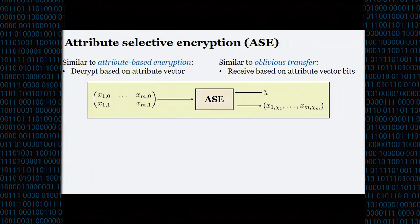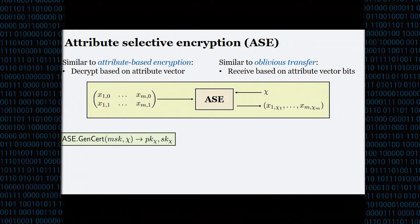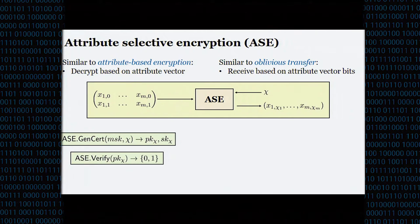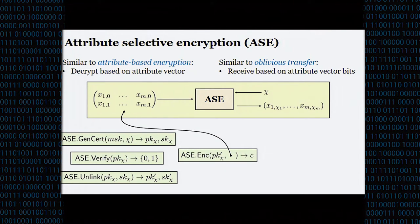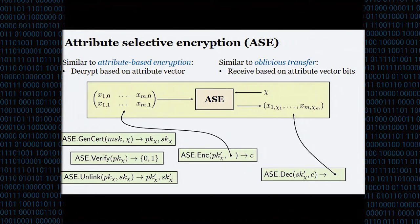In actuality, ACE consists of five algorithms. We have a GenCert algorithm which, given a master secret key and an attribute vector, produces a public key and secret key tied to that attribute vector — this is where the CA comes in. We have a Verify algorithm which verifies that the public key was created by the CA. We have an Unlink algorithm which produces a randomized version of the public key and secret key still tied to the same attribute vector. And then we have standard Encrypt and Decrypt, where Encrypt encrypts a set of two messages and outputs a ciphertext, and Decrypt takes that ciphertext and produces the messages corresponding to the attribute vector.